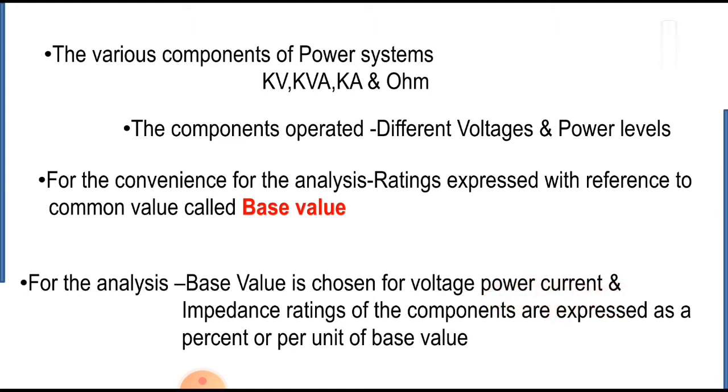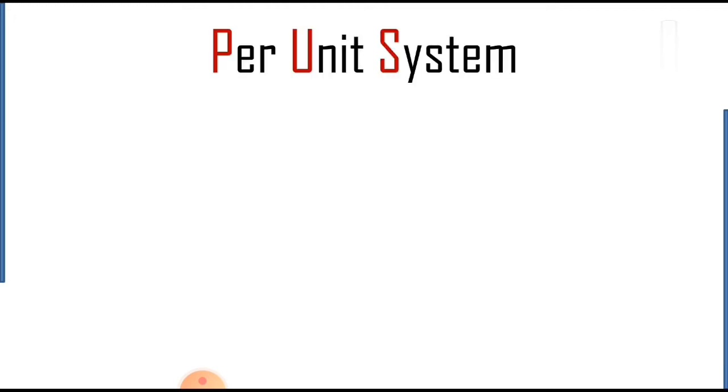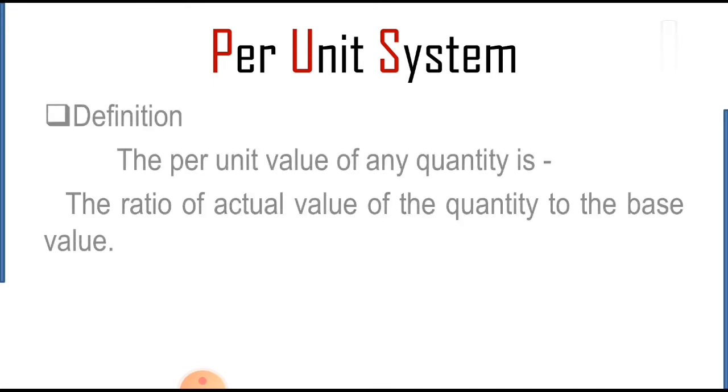Then all the voltage, power, current, and impedance ratings of the components are expressed as a percent or per unit of the base value. According to the definition, the per unit value of any quantity is defined as the ratio of actual value of the quantity to the base value.